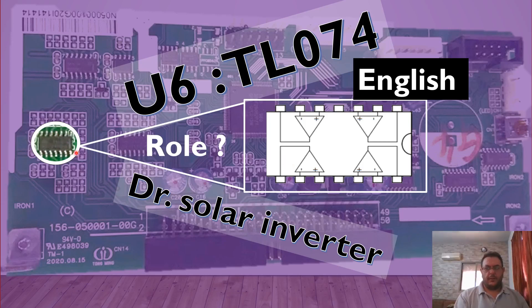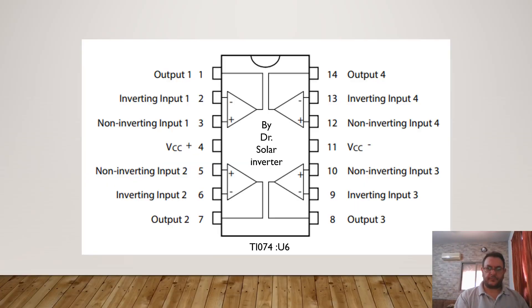This one. Now, this IC is formed by 4 op-amps, but it needs two voltages to operate normally. These two voltages are plus 12 volt and minus 12 volt from the main board SPS. We give these two voltages to this IC.